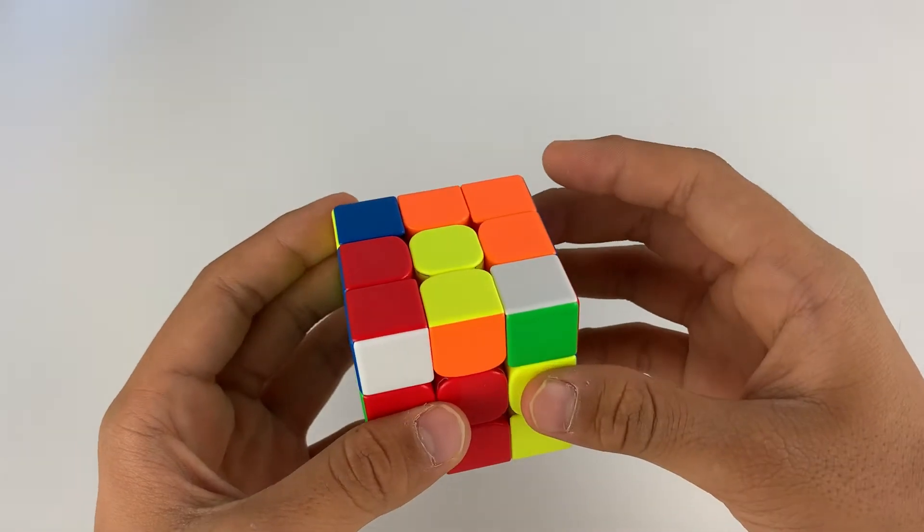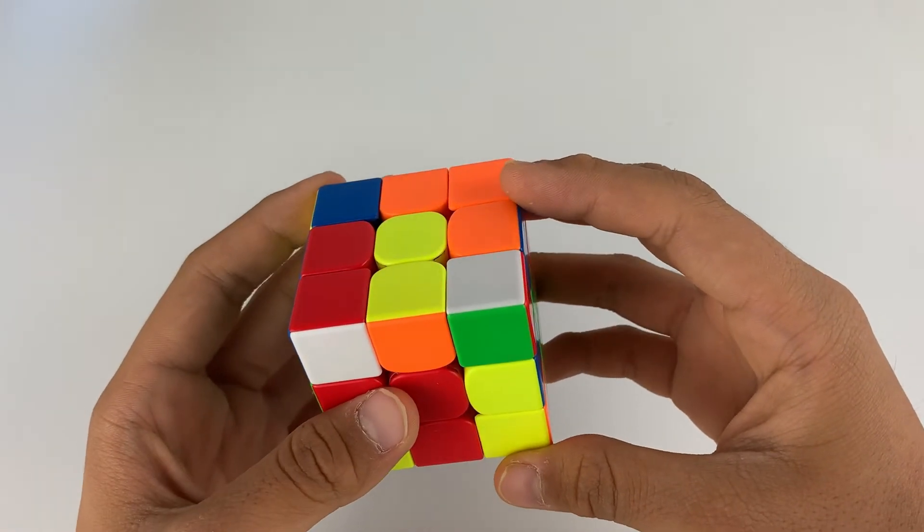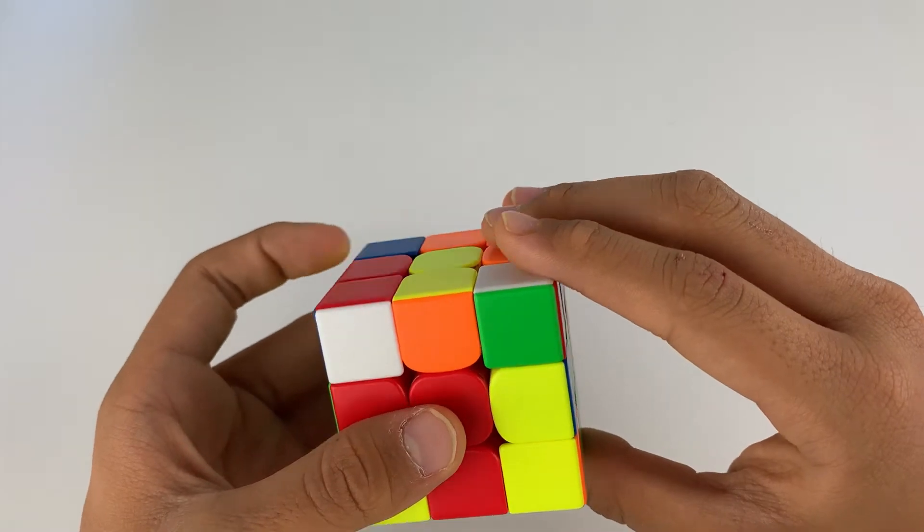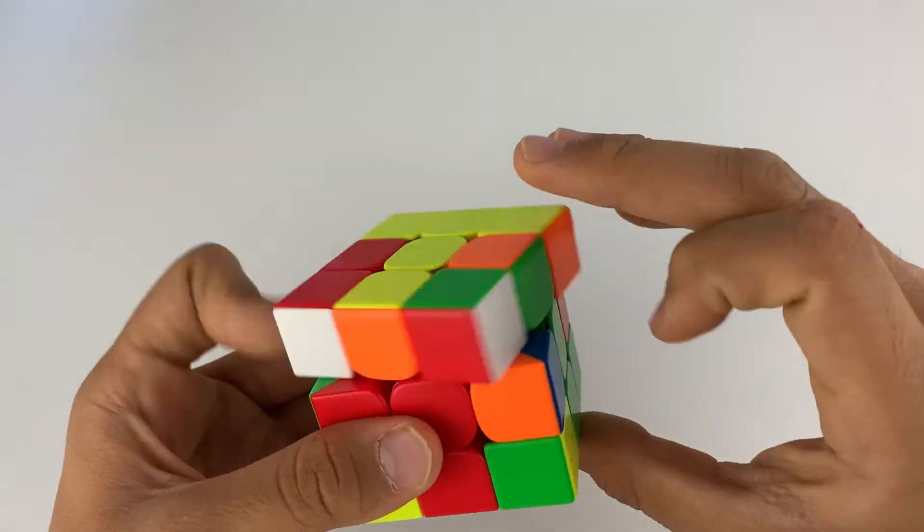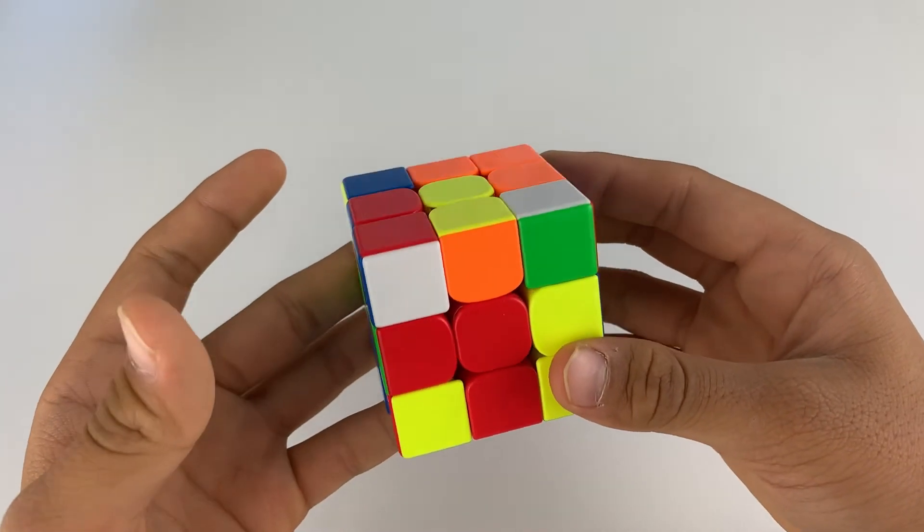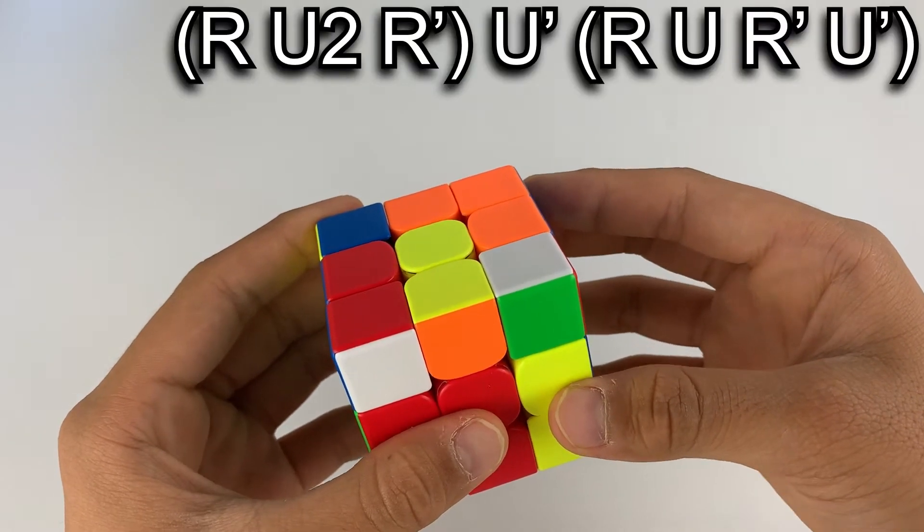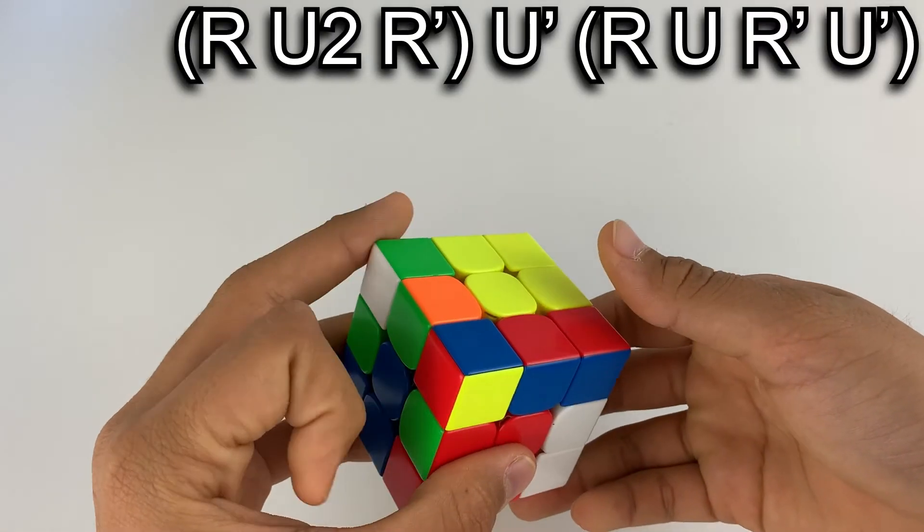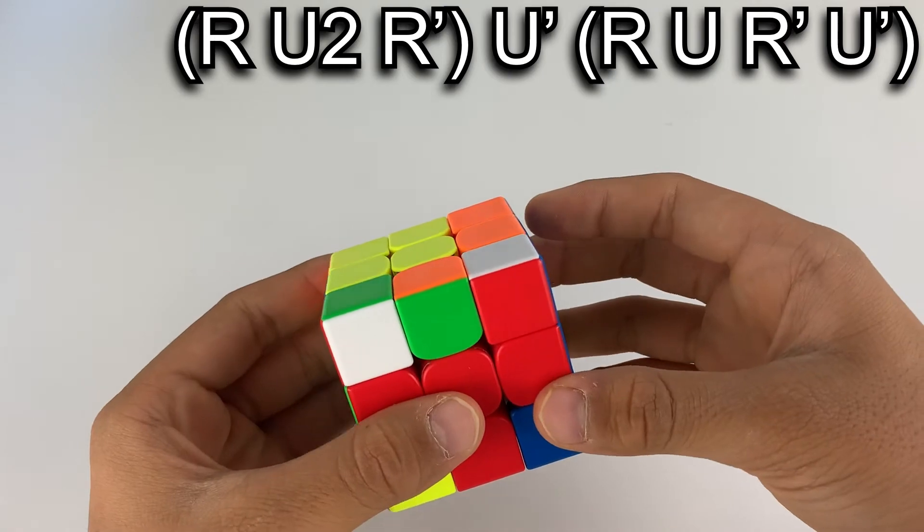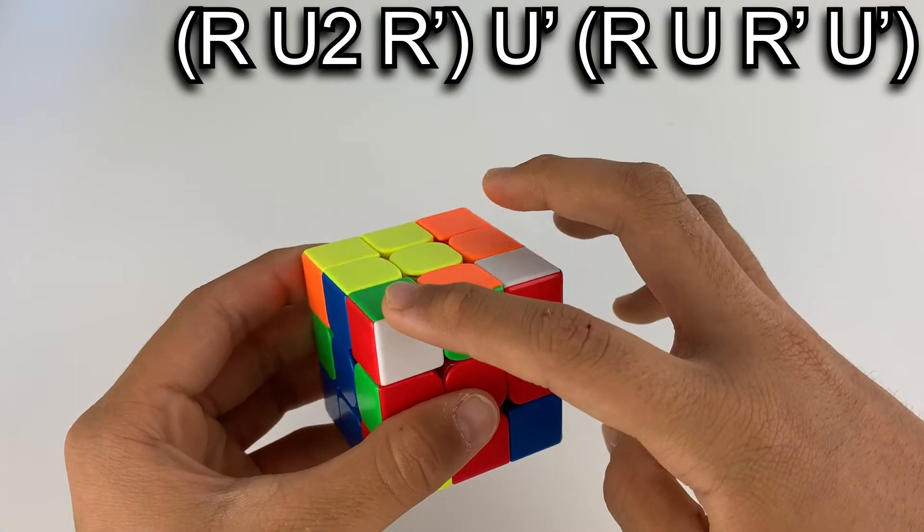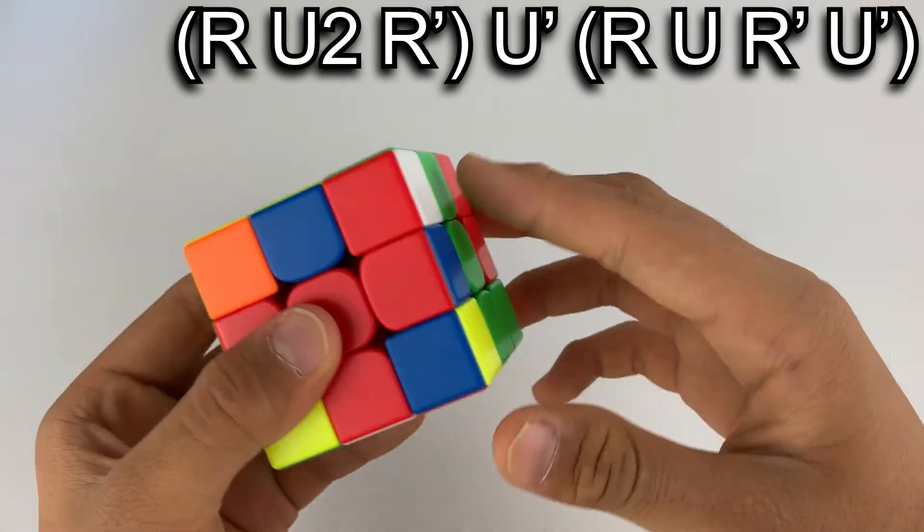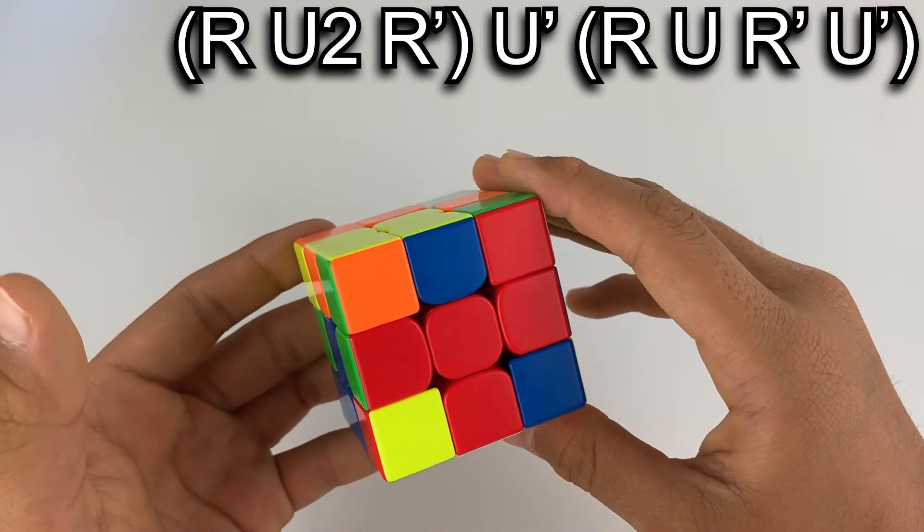This is the final case. It's not too bad, but it's still pretty annoying. So instead of having to do sexy move three times, you can just do this short algorithm: R, U2, R prime, and then now you have this case, so you can just bring it to this side, and then you'll have the first case.